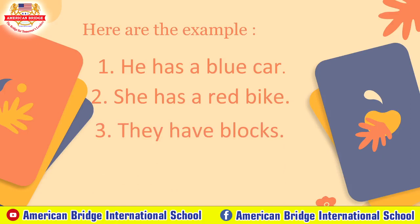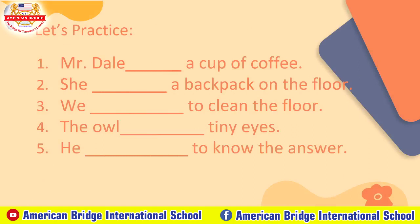Now let's practice with teacher. Look at these sentences and complete them with 'have' or 'has.' Number one: 'There has a cup of coffee.' Number two: 'She has a backpack on the floor.' Number three: 'We have to clean the floor.' Number four: 'The old man has tiny eyes.' Number five: 'He has to know the answer.'